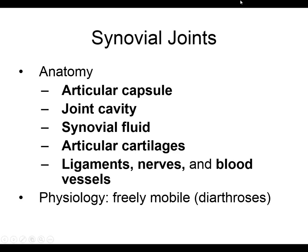Because synovial joints like the shoulder, elbows, and wrist move quite a bit, we need to stabilize them to prevent dislocation — so ligaments are used. The joint also requires fluid circulation, needing more blood vessels. And the joint is supplied by nerves: when we injure a joint or when someone has arthritis — whether rheumatoid or osteoarthritis — it is painful.